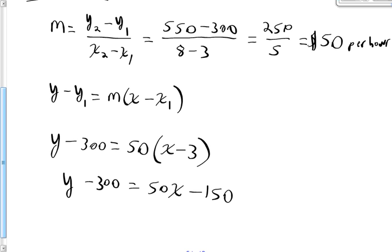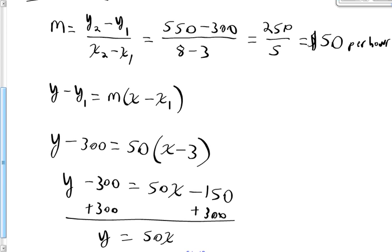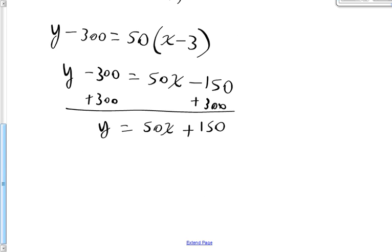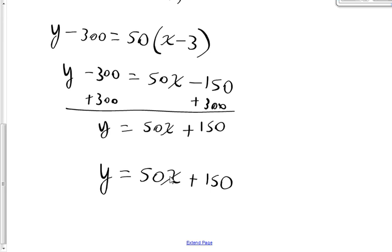Adding 300 to both sides gives y = 50x + 150. This means the cost of the plumber's house call equals 50 times the number of hours plus 150. When the plumber arrives and time is zero, he already charges $150 for the house call, and then $50 for each additional hour. Plugging in the number of hours gives you the total cost of the house call.